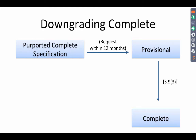Now, downgrading a complete. When you file a complete specification, the act uses the word 'purporting to be a complete' or a 'purported complete specification,' meaning it is complete but there are some issues with it, or you regard it to be complete but for some reason now feel it does not do the job of a complete. The act in Section 9.3 uses the word 'purporting to be a complete specification' — something which is alleged to be a complete specification for whatever reason.